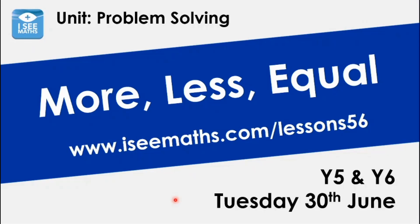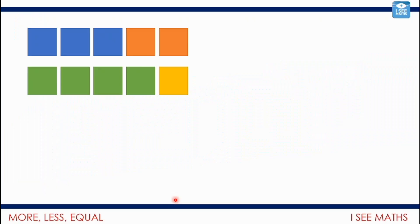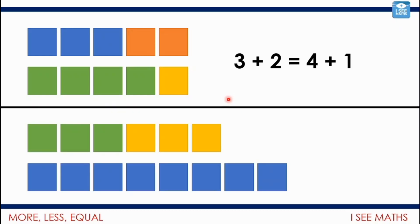The main focus of today's video is more than, less than, and equals — looking at number sentences and using the signs for that, which leads into our problem-solving task. This image can be described by the number sentence 3 + 2 = 4 + 1, because both equal 5. Whereas this example can be written as 3 + 3 < 8, or 8 > 3 + 3, because we can see that it indeed is.